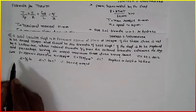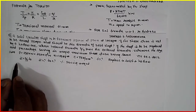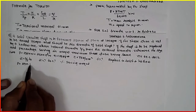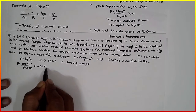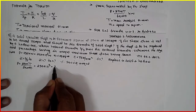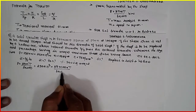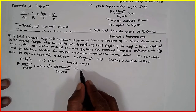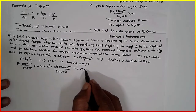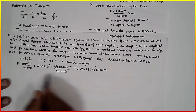I will use the formula T/JP = τ/R for the solid section. But first, since I don't know the torque, I will find it from the power. Power P = 2πNT / 60,000. Substituting: 550 × 10³ = 2π × 100 × T / 60,000. Cross-multiplying gives T = 23.87 × 10⁶ N·mm.